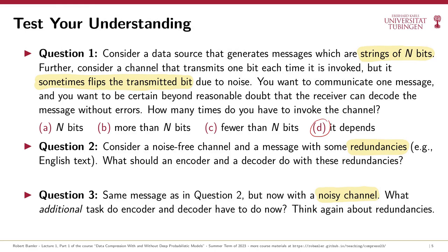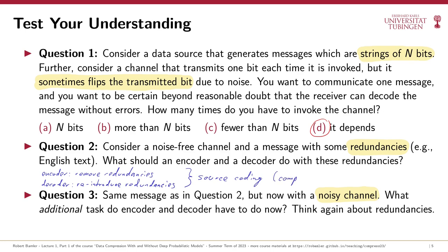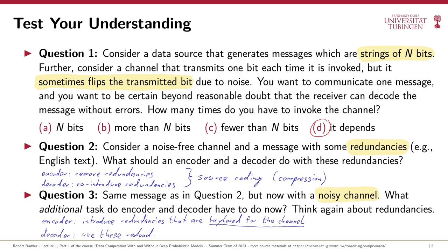In question two, we know the message contains redundancies so it can be compressed, and the channel is noise-free so we don't have to worry about error correction. My answer is that the encoder has to remove the redundancies from the message and the decoder has to reintroduce the redundancy so it can reconstruct the original message. This is called source coding or data compression, and it's the main focus of this course. Finally, in question three, we again have a noisy channel. My answer is that the encoder now has to add some redundancies, but different redundancies from the ones it removed — these added redundancies have to be tailored for the channel so that the decoder can use them to detect and correct errors.